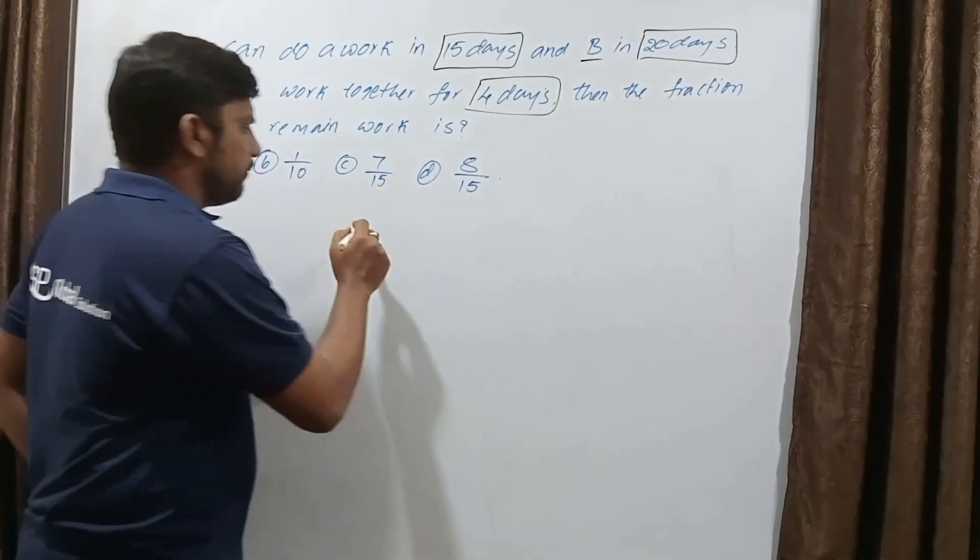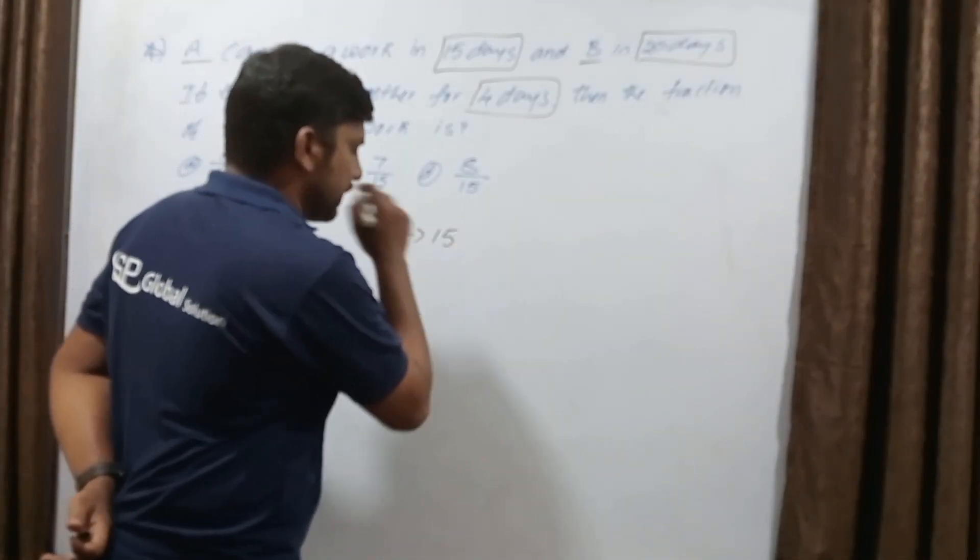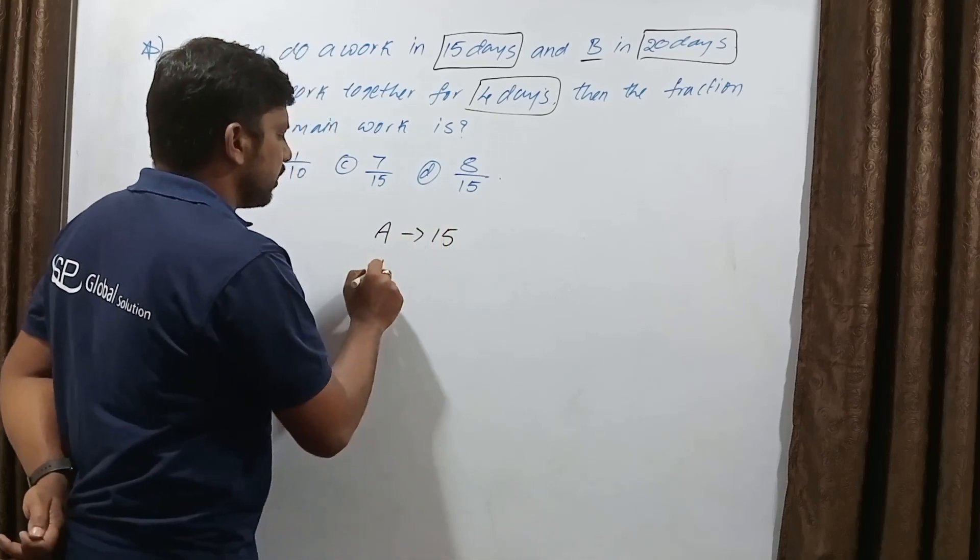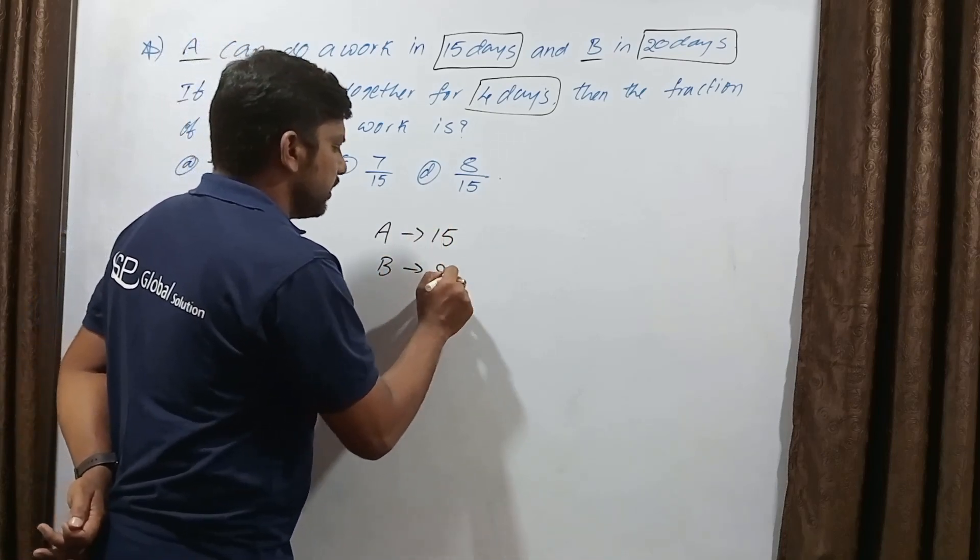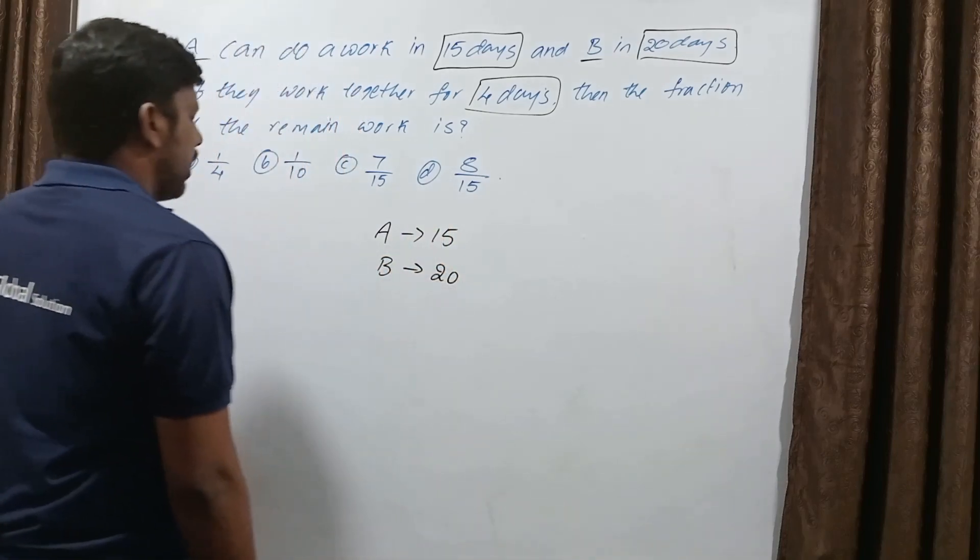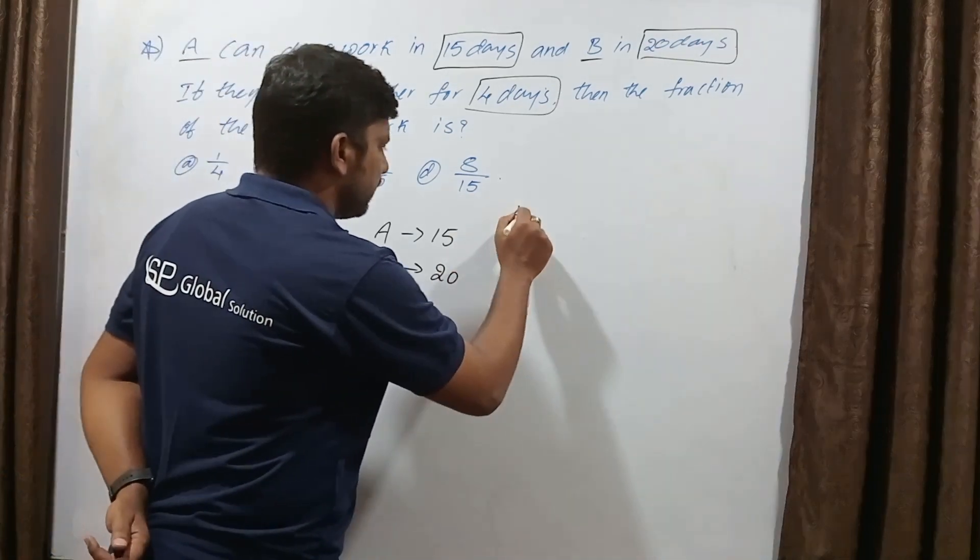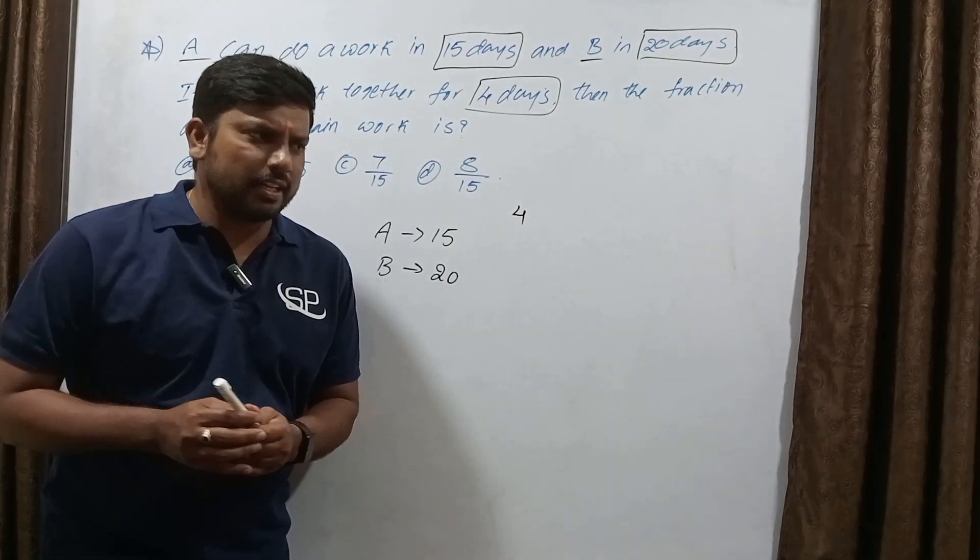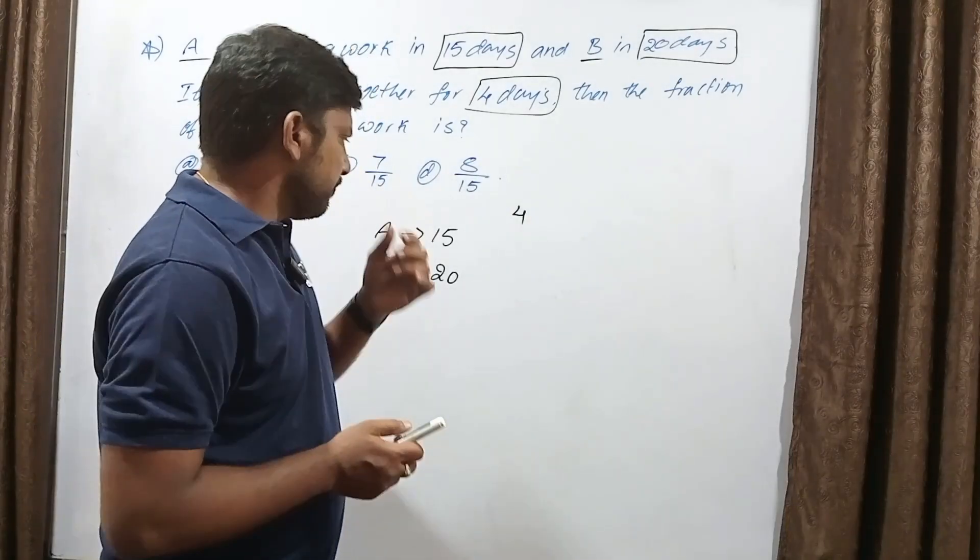A can do the work in 15 days, and B has the capacity to do it in 20 days. After 4 days, if they do work together for 4 days, find the remaining work.